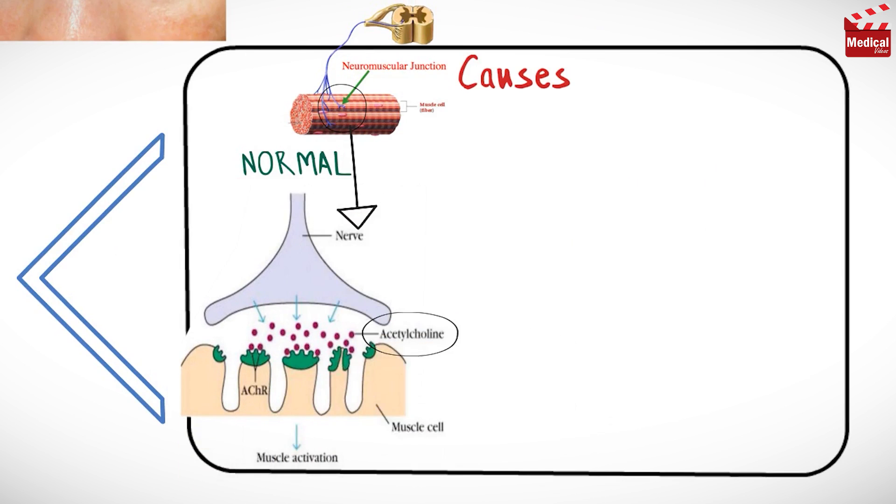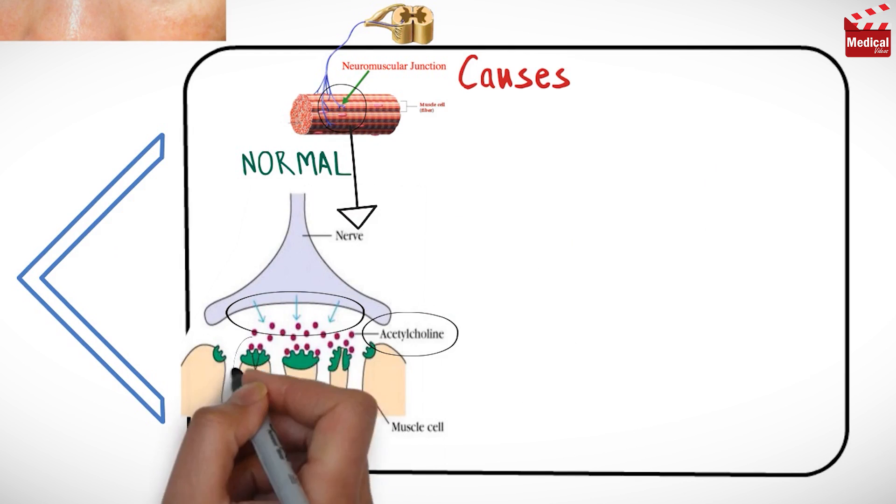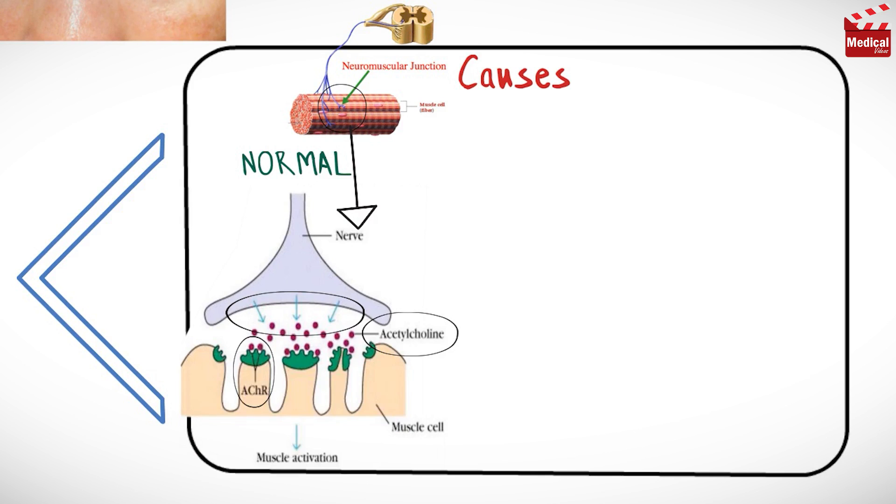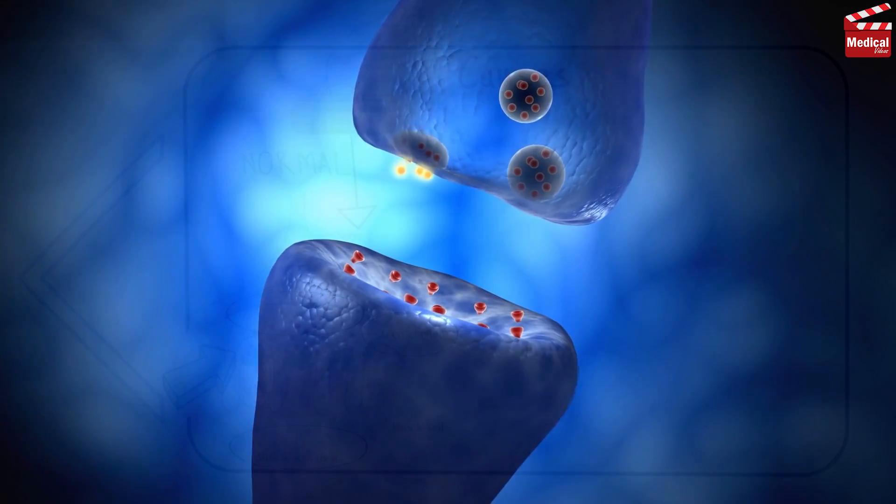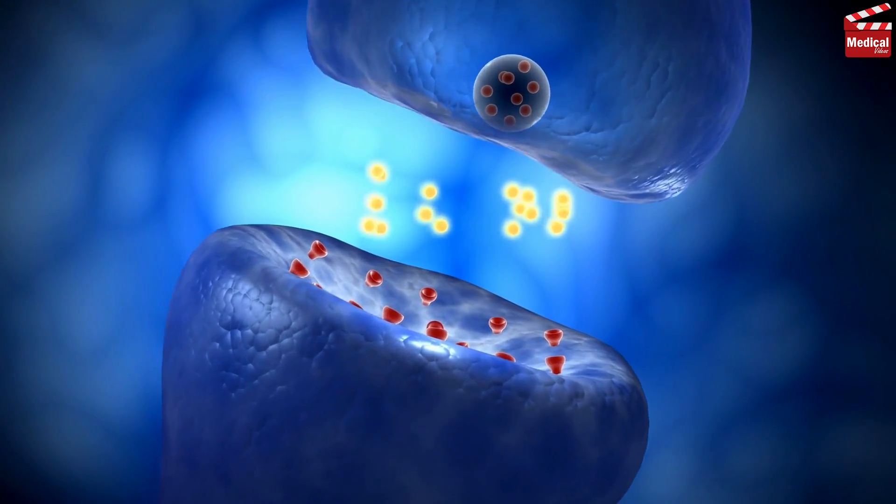Binding of acetylcholine to its receptor activates a chain reaction in the muscle cell that ultimately results in muscle contraction. So acetylcholine transmits nerve impulses to muscles.